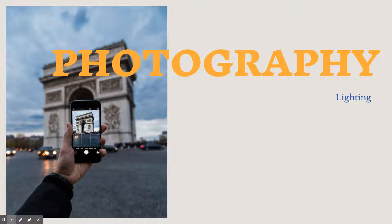Now we're talking about the photography unit and how to use your cell phone to photograph your work. We'll be using natural light in the beginning to light your subject or product for your photographs.